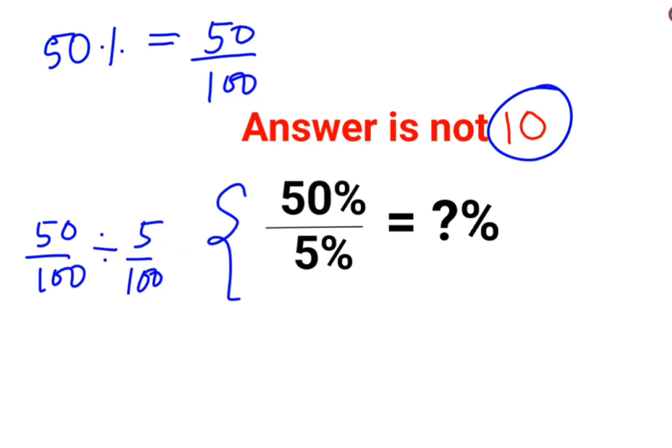Now whenever you have division, you need to follow the rule of KCF where K stands for keeping the first number as it is, C stands for changing the division sign to multiplication, and F stands for flipping or taking reciprocal of 5 upon 100 which is 100 upon 5.